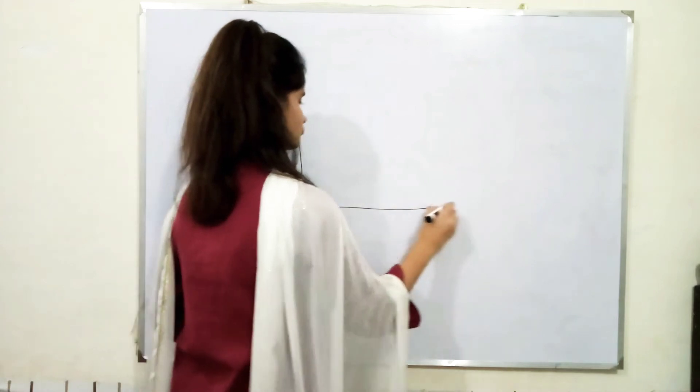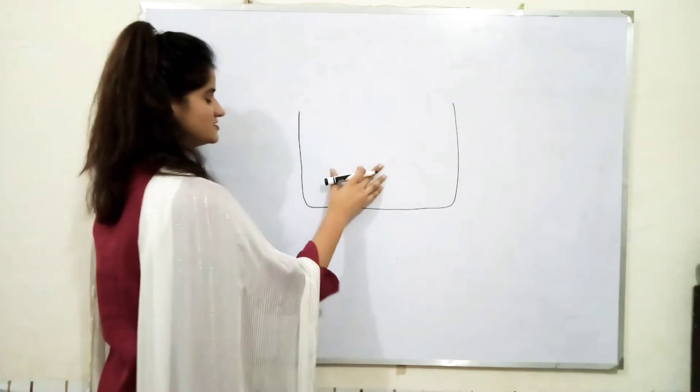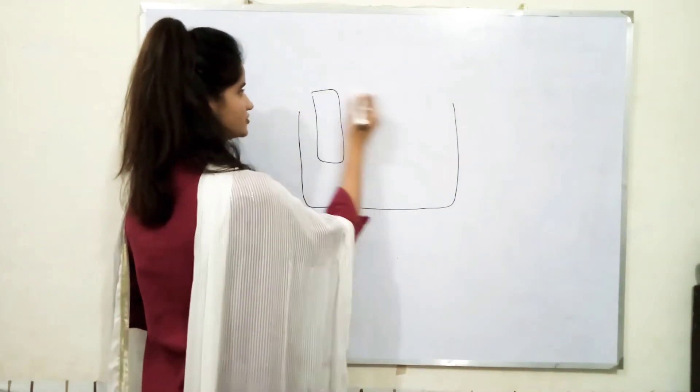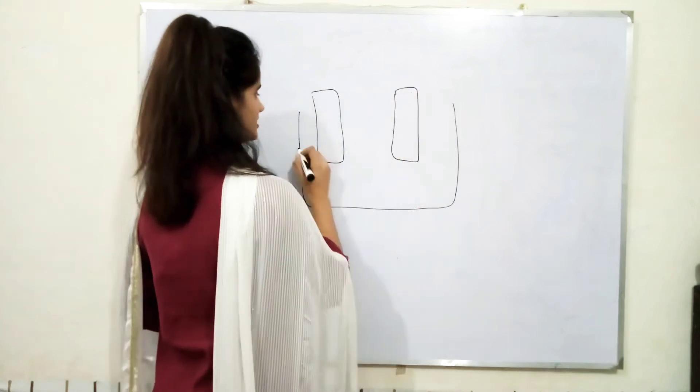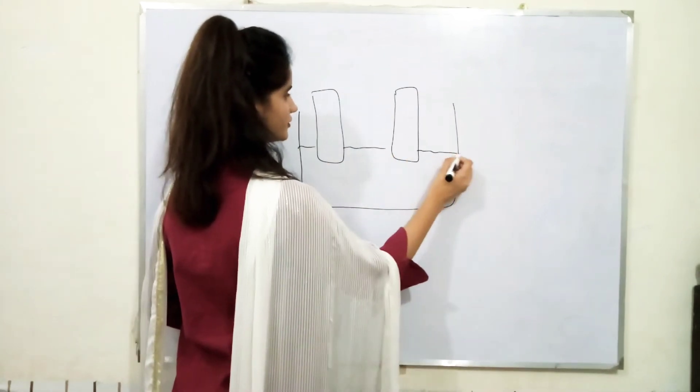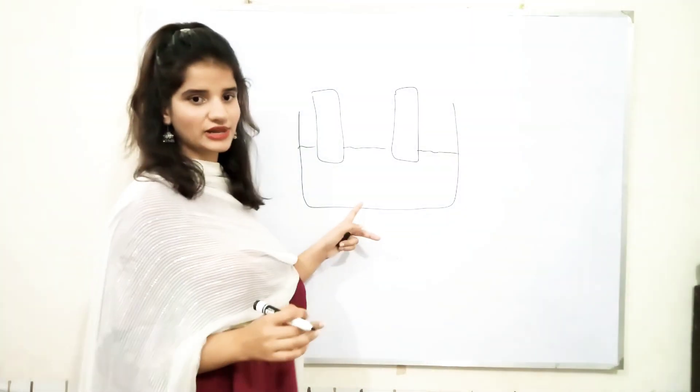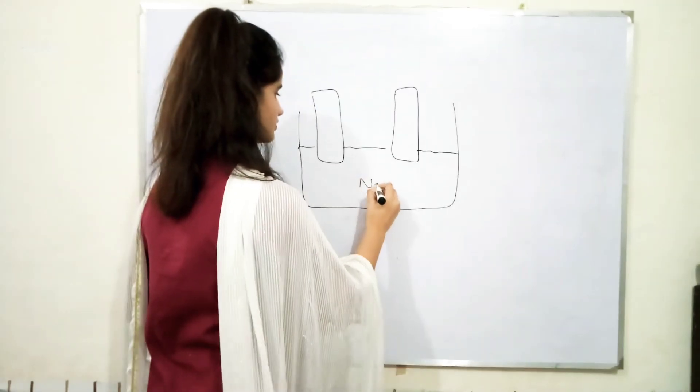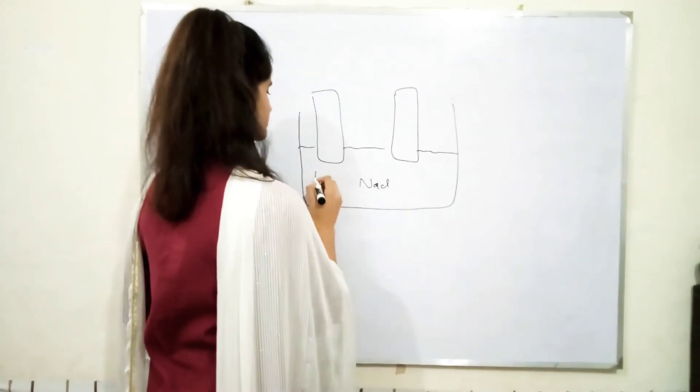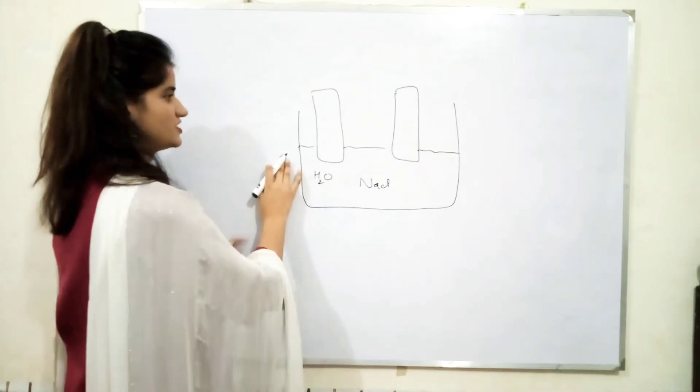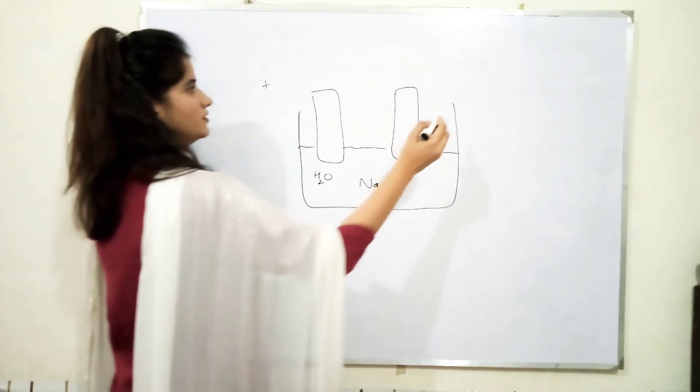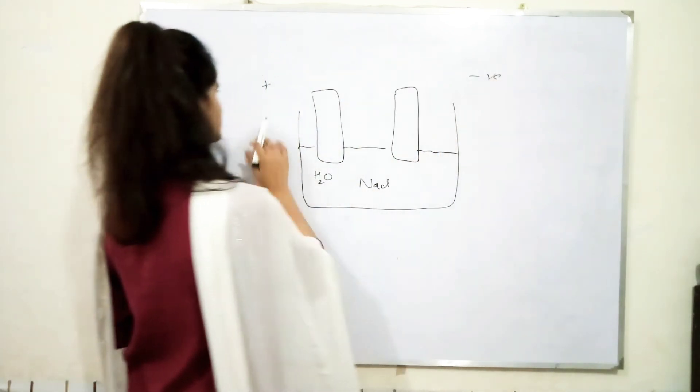For example, we know that this is a voltmeter, electrodes are present, electrolyte is also present in there. The electrolyte which we are going to use is sodium chloride and water is also present inside. Now, we have provided it some electric current.